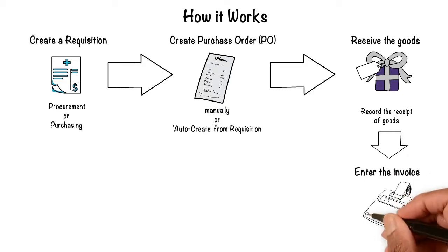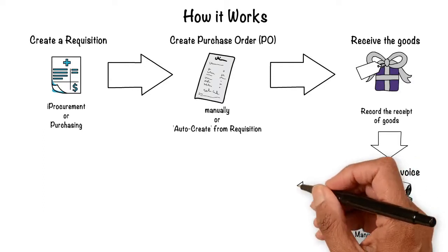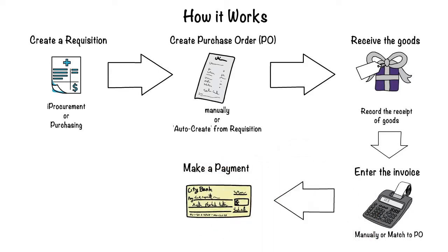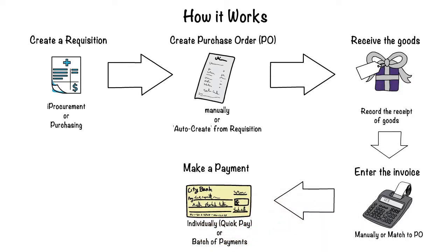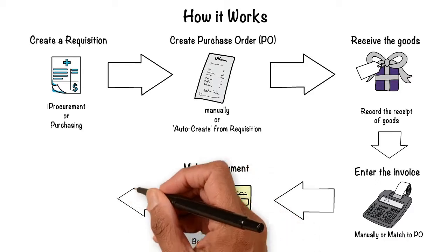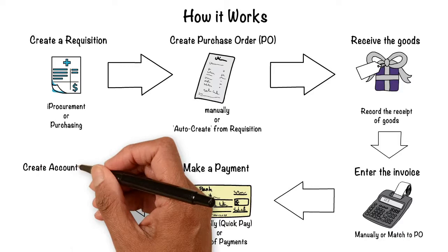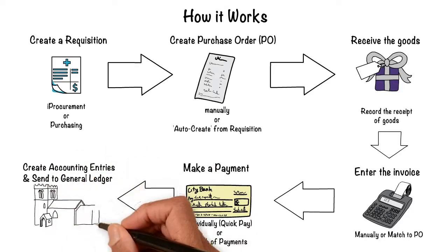For entering invoices, there are two different methods: you can enter it manually or you can match it to a Purchase Order. And then we need to make a payment for those purchases — either via quick pay or through a payment batch. Finally, once all the transactions are complete, we need to create accounting and transfer those accounting entries to Oracle General Ledger.